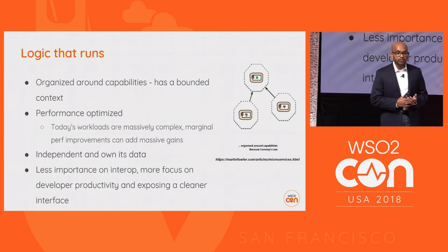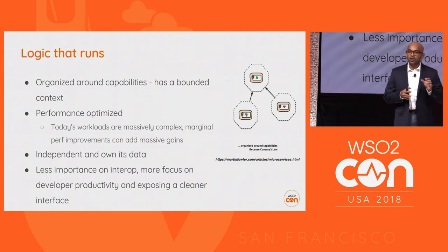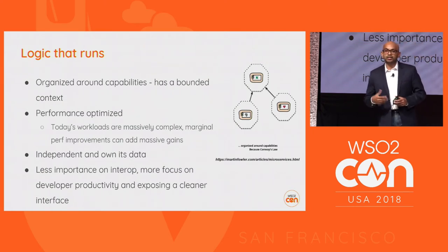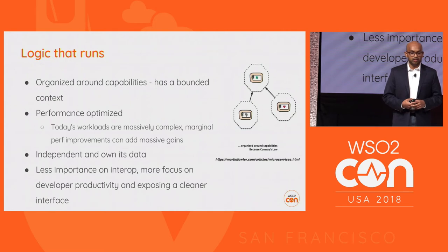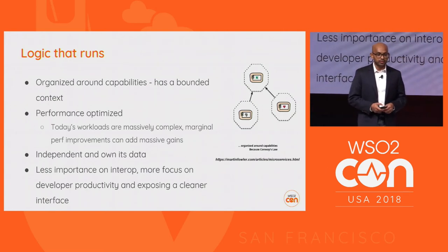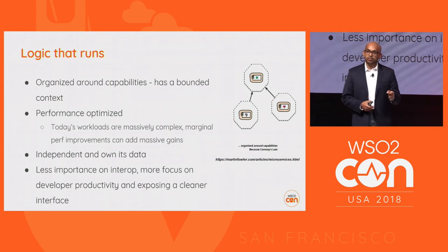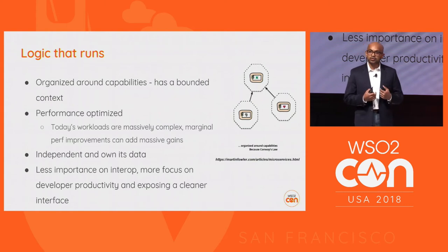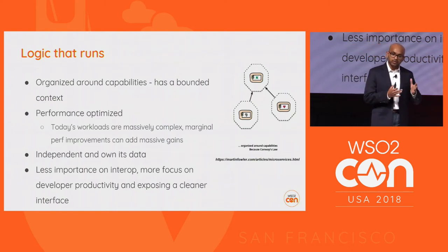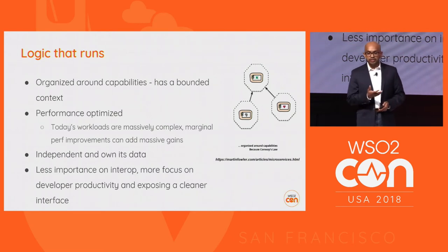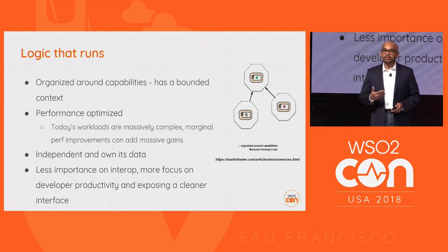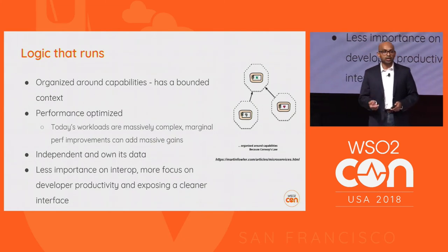Performance is optimized — today's workloads are massively complex, and even a marginal performance improvement will give you better cost efficiencies. Independent and owning its own data — this is what Martin Fowler talked about with distributed data ownership. If I'm writing a microservice, it will create data, consume data, and have its own data store. With that pattern, you can think about architectural patterns like CQRS — command query separation.